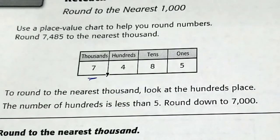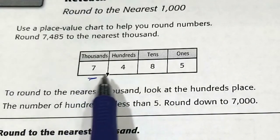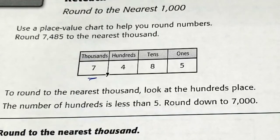So what you want to do is you want to underline where you want to round. In this case the thousands, and we always look at the number after it. If that number is greater than 5 you round up. If it's less than 5 you round down.